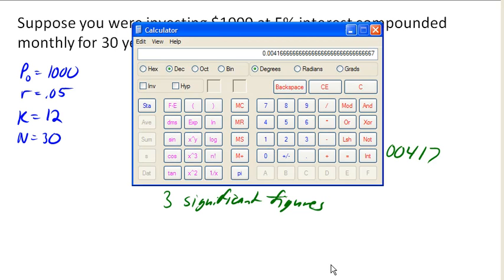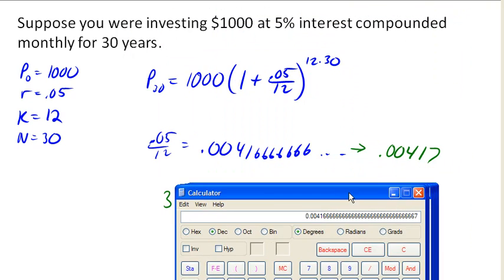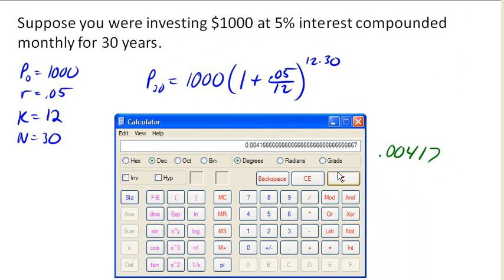because what I could do is after dividing, again, .05 divided by 12, and getting that ugly decimal, I could go ahead and say, let's go ahead and add 1 to that,